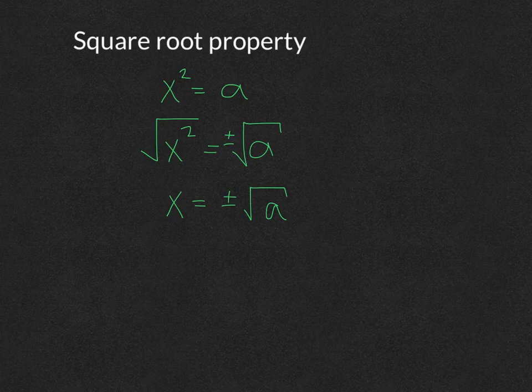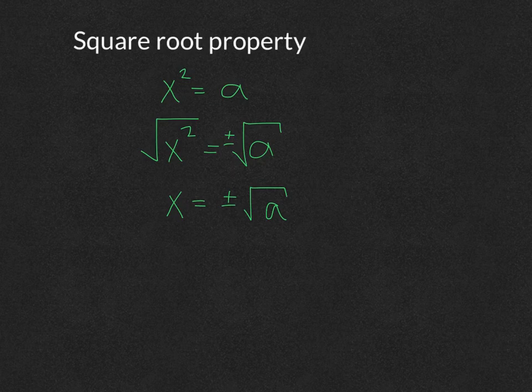The reason you need plus or minus is because negative square root of a squared would be x and positive square root of a squared would also be x.